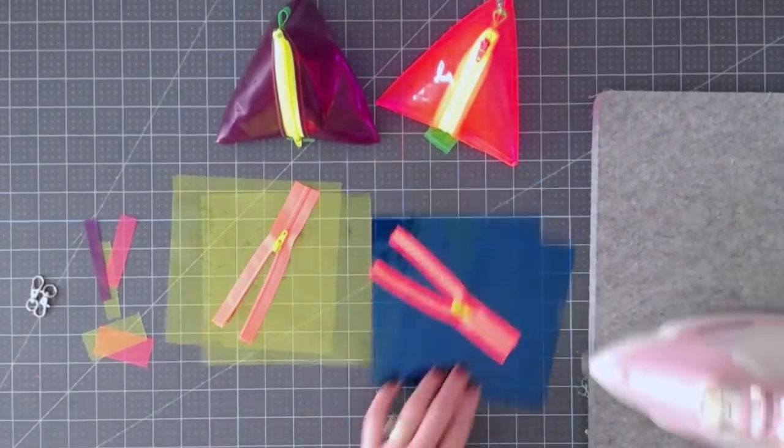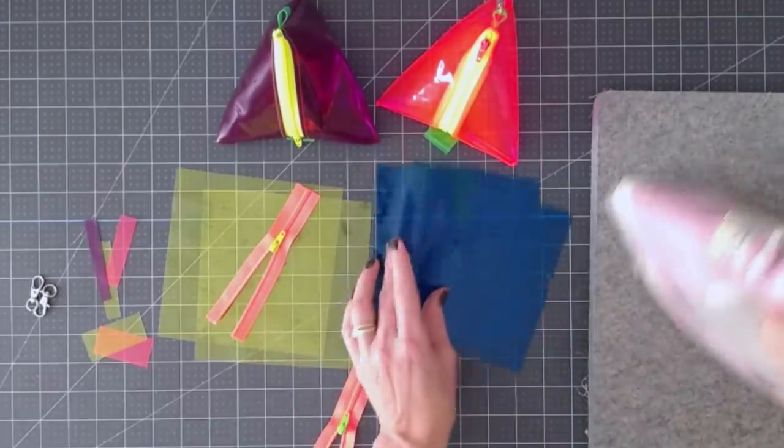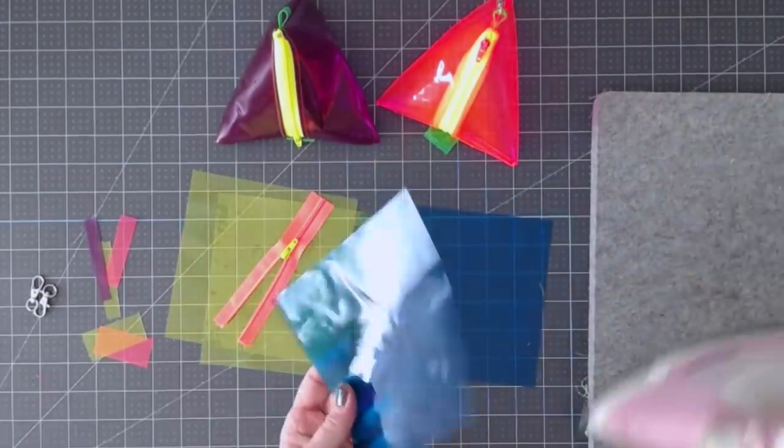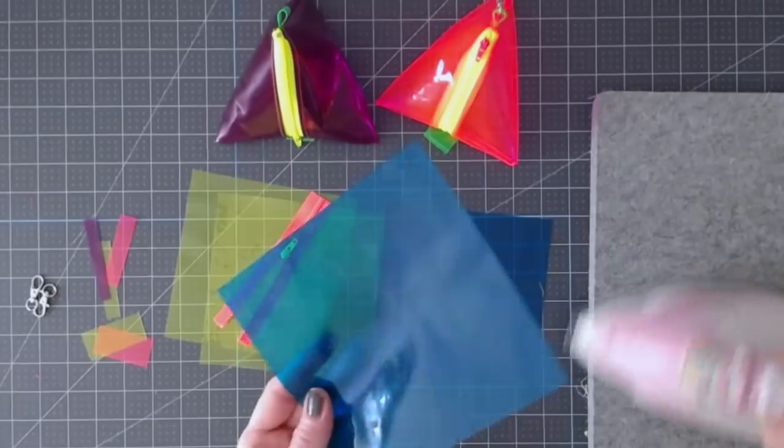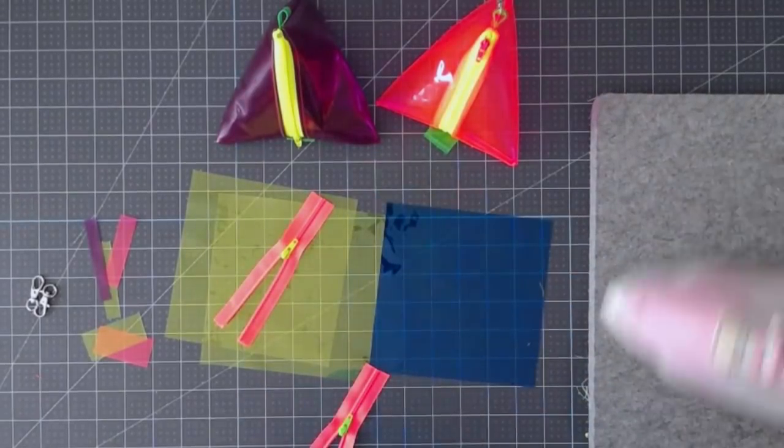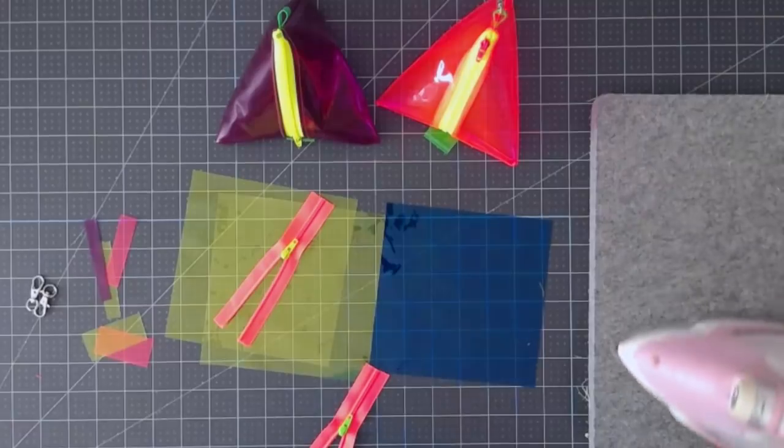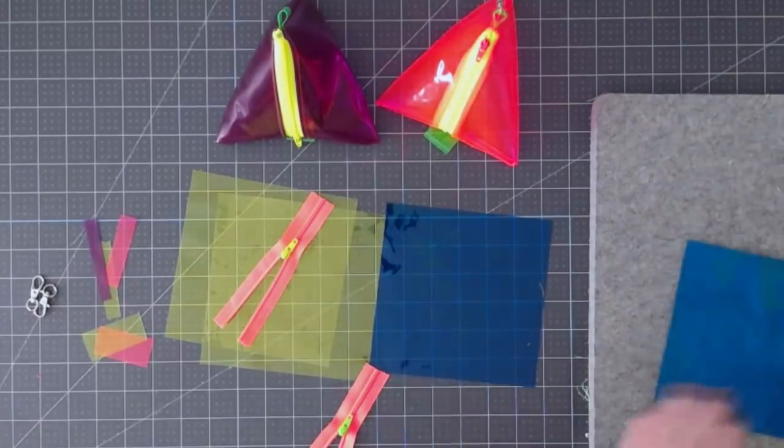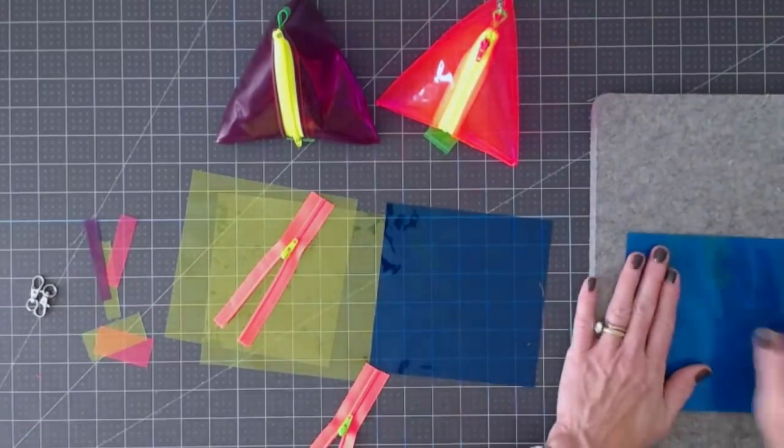Now if your vinyl is at all wrinkly or I'm using scraps so these are kind of messed up a little bit, you just want to iron your surface, get your iron nice and hot, add a little steam, and then place the plastic on your surface and you'll see those wrinkles come right out and it also makes this really pliable.